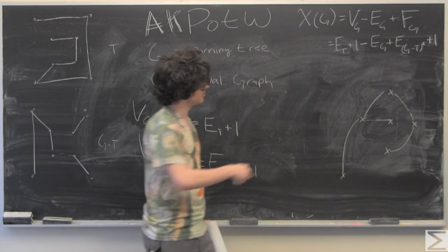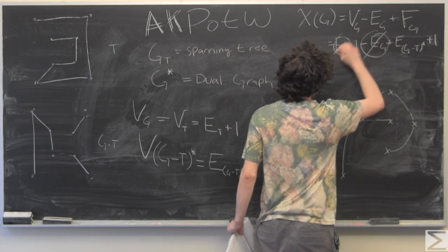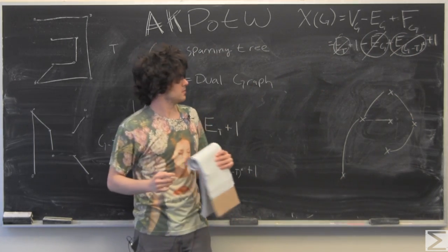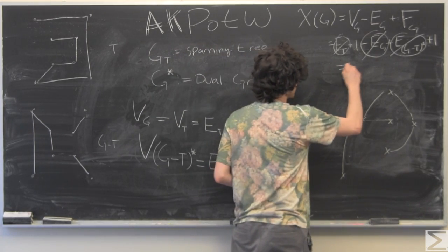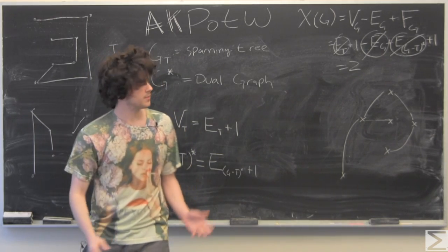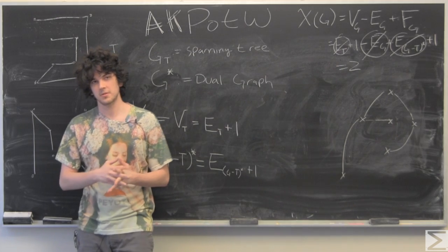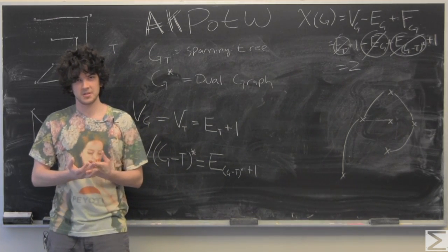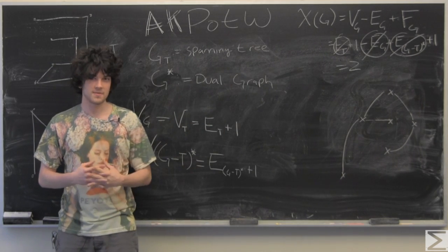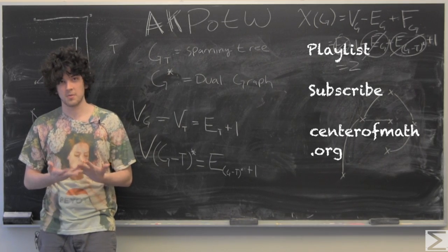Those three quantities are all going to cancel out — they're equal to each other — and we're left with 2. That's the proof that the Euler characteristic of any planar connected graph is equal to 2. Thank you for watching. This is a proof about graph theory; I hope you learned something from it and are inspired to learn more about graph theory.